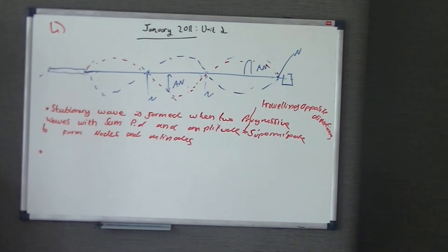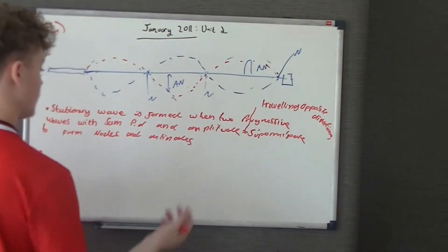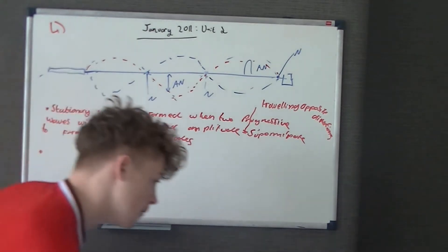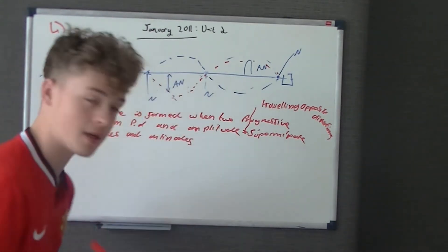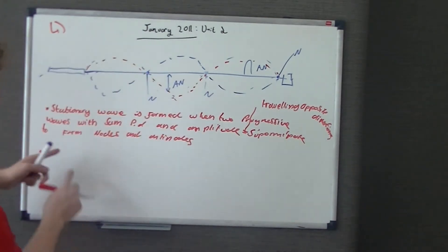So that's sort of one mark we've got for the, well we could have two here actually, for explaining how the stationary wave is formed, for talking about progressive waves with the same PD and amplitude travelling in opposite directions. That's about two marks. So we need a couple more points here. And it says, so that's the first part. And it says, describe the key elements of the stationary wave. We've sort of mentioned it here, to form nodes and antinodes.